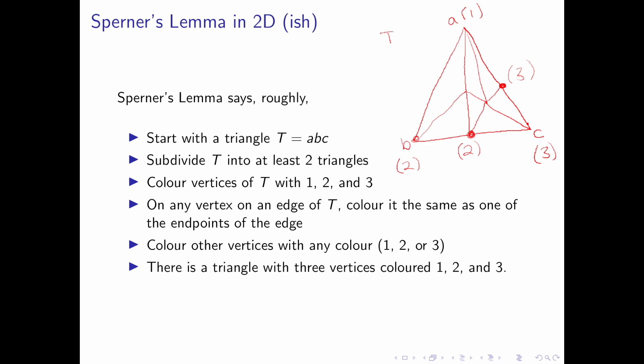These are the main vertices of T. And we have two internal vertices. These can be colored any color. Let's assume this one is colored 1 and this one is colored 2.